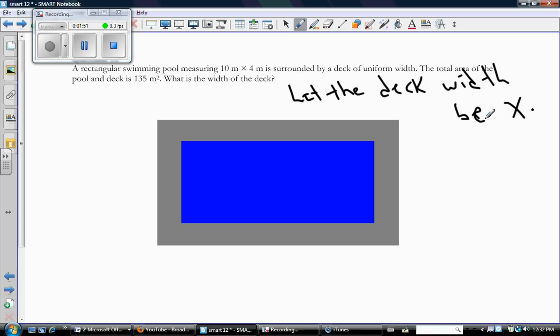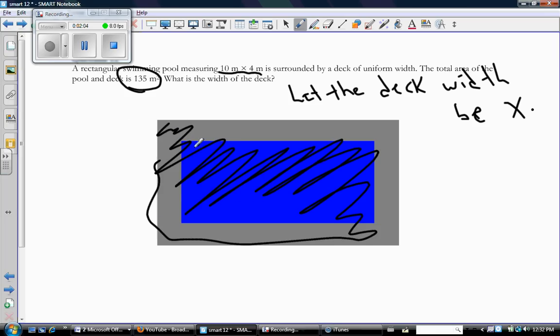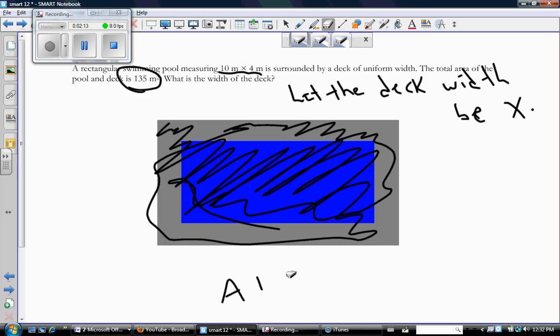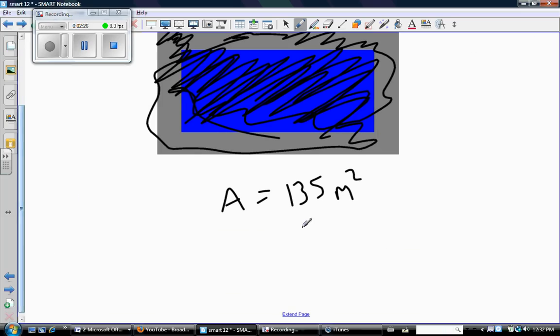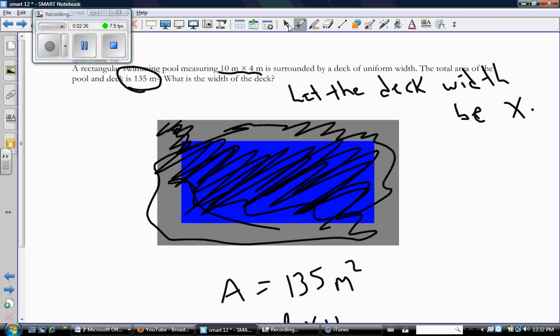Now, the only information that we have to help us create an equation is the size of the original smaller pool, so the blue, and the fact that the total area, here's the total area. So this rectangle here, which I'm shading in, that has an area of 135 square meters. Now, this thing that has an area of 135 square meters is a rectangle. And how do you find the area of a rectangle? So its area is length times width. So if we can figure out what the length and width are, we can set up an equation.